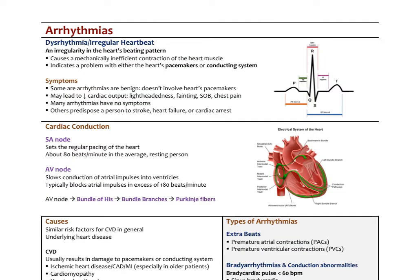Arrhythmias, also known as dysrhythmias or irregular heartbeats, are an irregularity in the heart's beating pattern. As a result of that irregularity, it causes a mechanically insufficient contraction of the heart muscle, so there's decreased cardiac output. This is either a problem of one of the pacemakers in the heart, such as the SA node or the AV node, or a problem somewhere in the conducting system — either in the atria or in the ventricles. We tend to classify these arrhythmias either as supraventricular, above the ventricle, or ventricular.